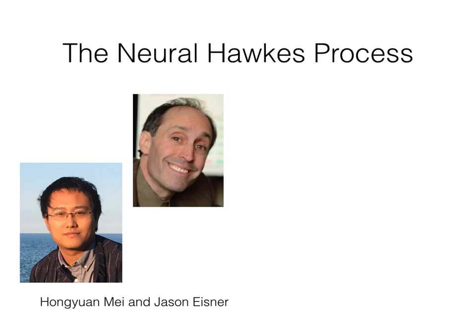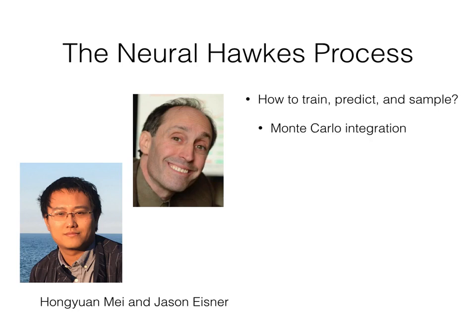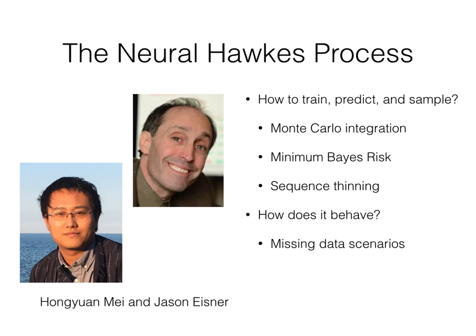How do we train the model? How do we predict and sample with the model? It involves Monte Carlo integration, minimum Bayes risk, and sequence thinning. How does it behave, especially in missing data scenarios? How does the model size increase with the number of event types? And much more.